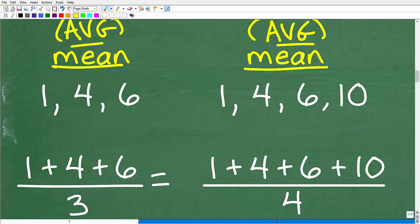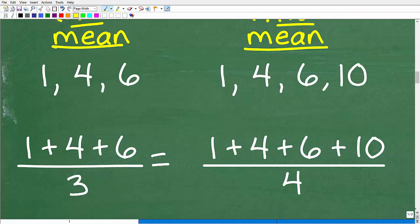And I think most of you, hopefully, remember how to calculate the average. So when we calculate the average or the mean, what we do is we add up the numbers or the values in our data set, and then we divide by how many numbers that we have. So here we have three numbers, 1, 2, 3, and the value of these numbers is 1, 4, and 6.